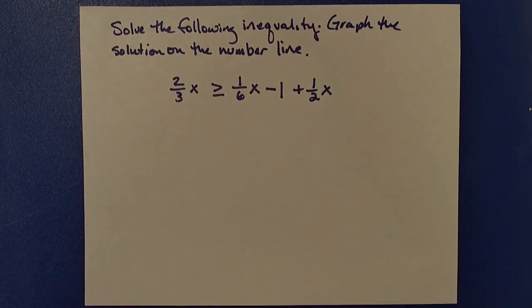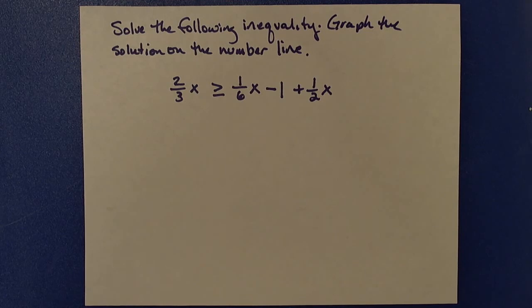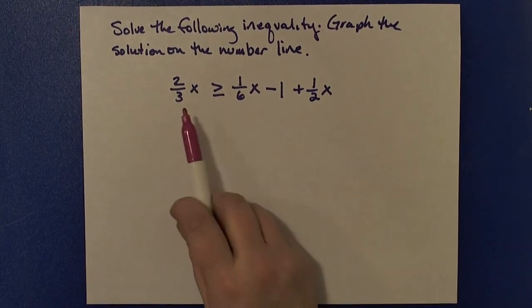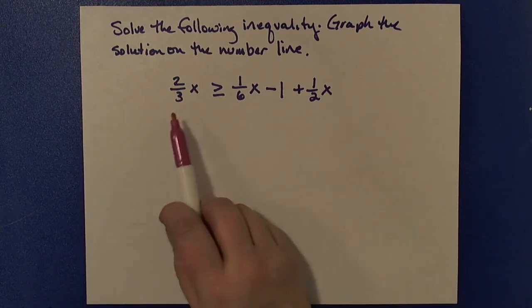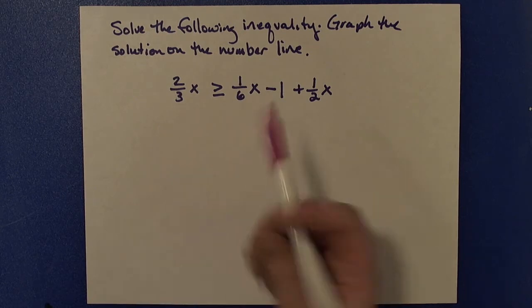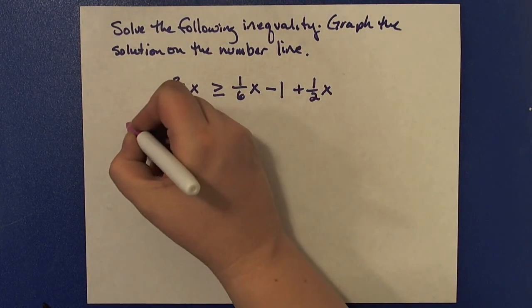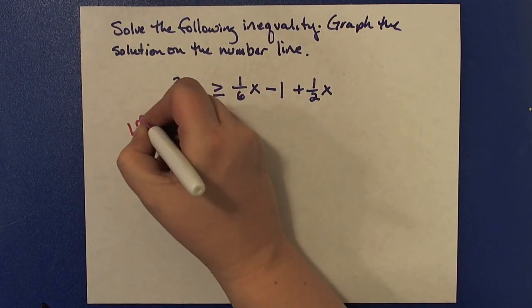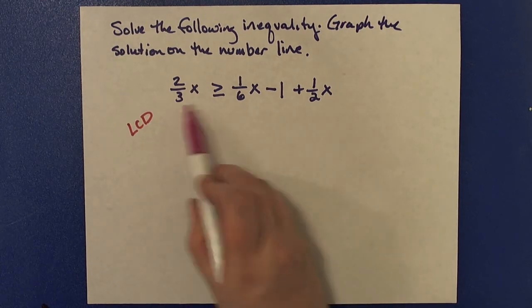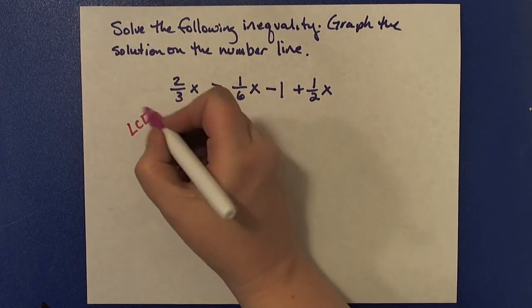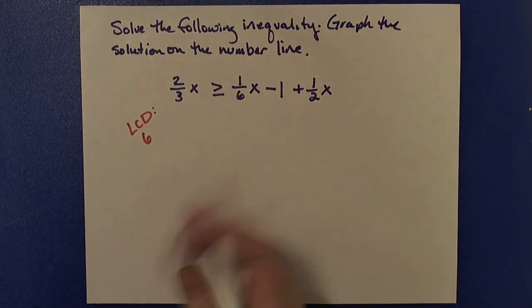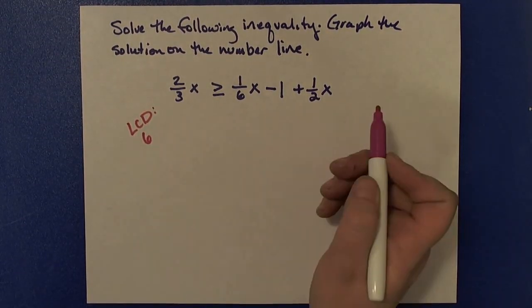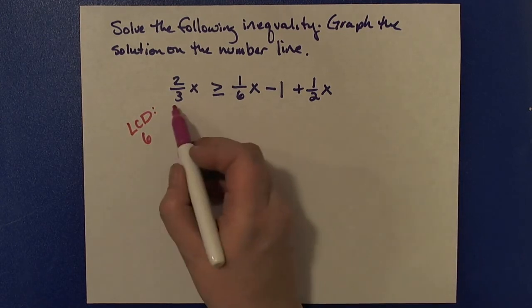As I start to solve this, my first step would be to work it like I would an equation. And I might choose at this point to eliminate the denominators. To clear the denominators, we multiply by the lowest common denominator. I have a 3, a 6, and a 2. So the lowest common denominator between those is 6. I'm going to choose to clear the fractions by multiplying both sides of the inequality by 6.